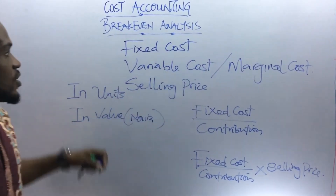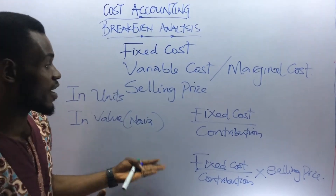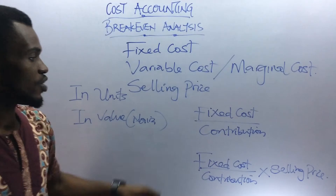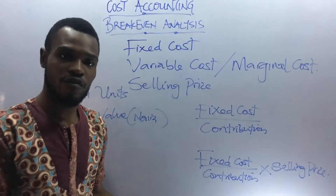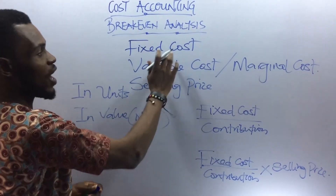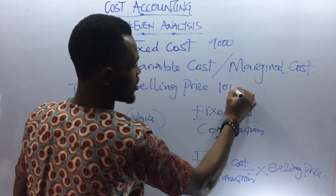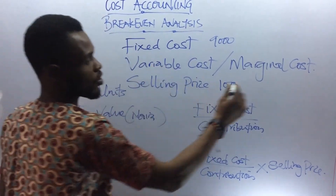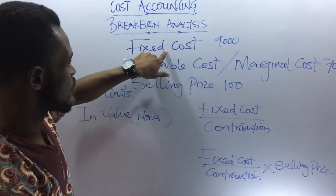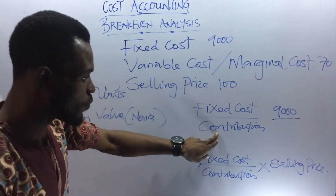Now, if you take a good look at this, we have the fixed costs, we have the variable costs, we have the selling price. There is nothing like variable here and there is also nothing like contribution, which is to tell you that to get this contribution there is a formula for it. For fixed costs, let's assume you have a question where fixed costs are $9,000, selling price is $100, and variable costs are $70. This is fixed costs — $9,000 — so you have $9,000 divided by contribution.